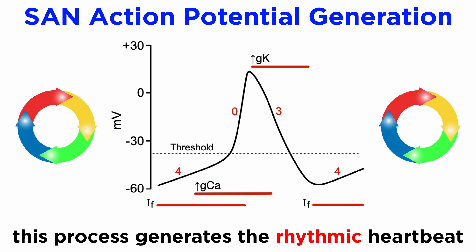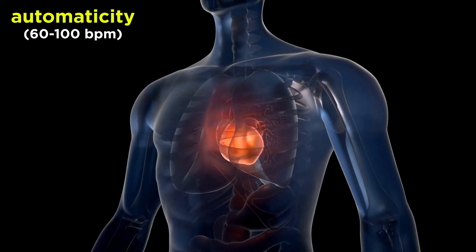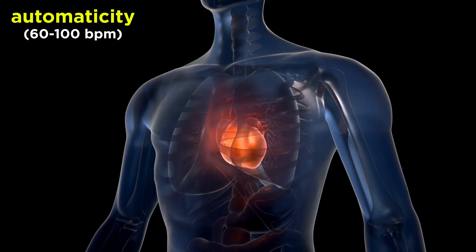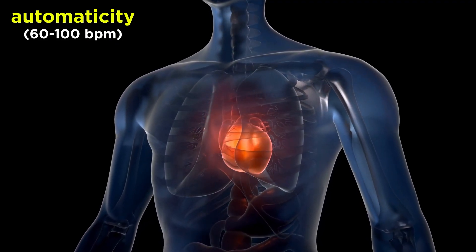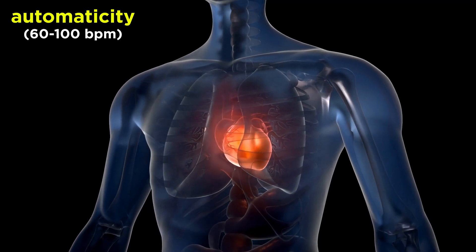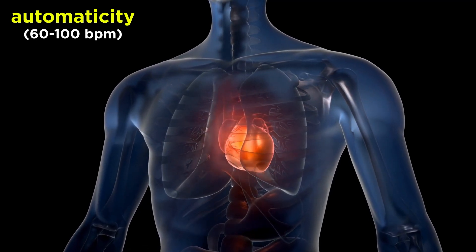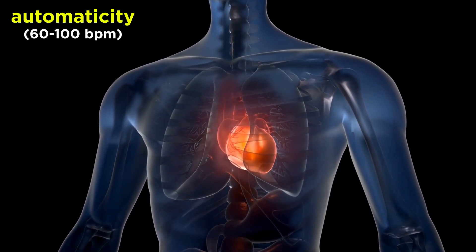We can start to appreciate how this sequence of events generates rhythm, as each channel's activity primes the next channel in a loop that eventually gives rise to automaticity and a physiological heart rate, which is typically 60 to 100 beats per minute.